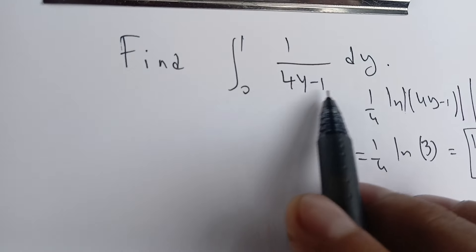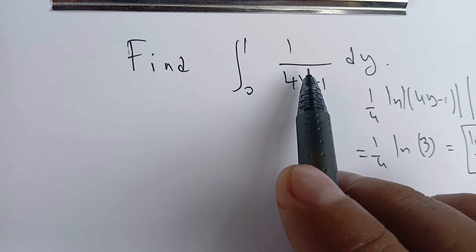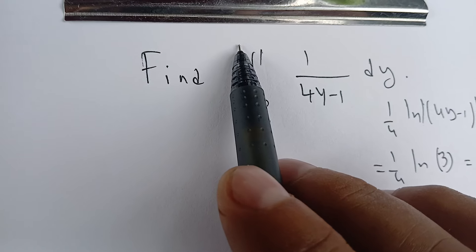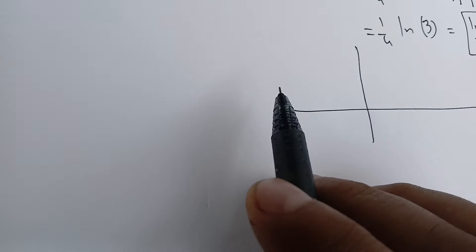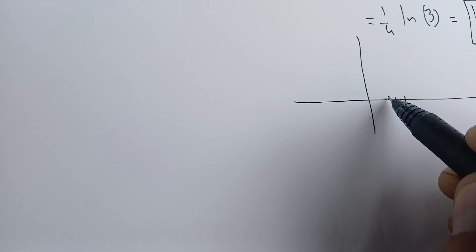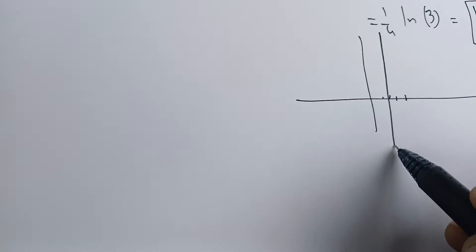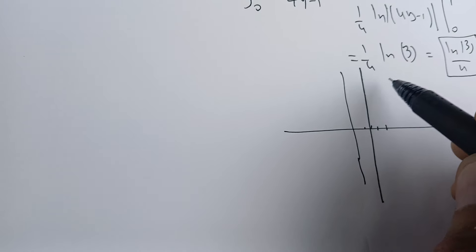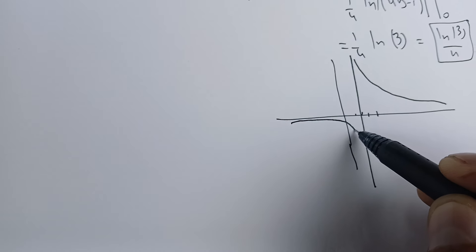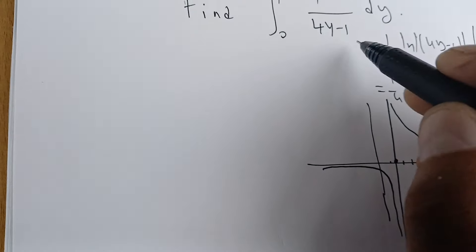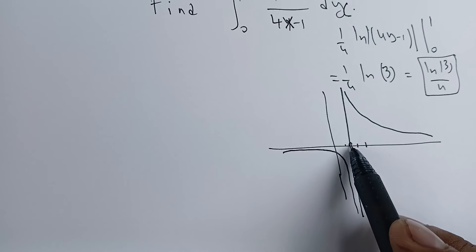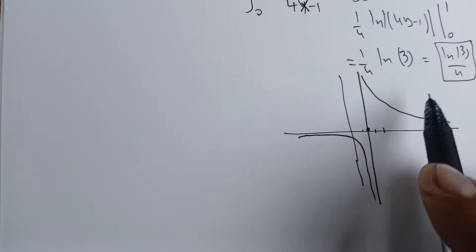This means the area appears bounded, but there is an issue: when y equals 1/4, the function is not bounded because we have a discontinuity from both the left and the right. If we graph the function, we see that at x = 1/4 we are dividing by zero, so this is an improper integral of the second kind.